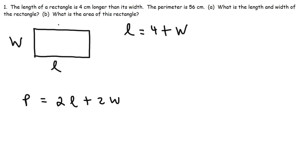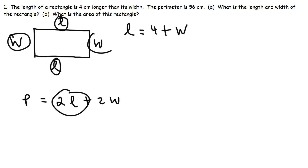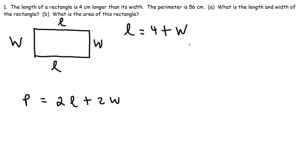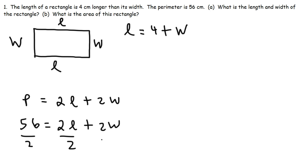Keep in mind we have L here and W here, so L plus L gives us 2L, and W plus W gives us 2W. We're going to replace P with 56, so we have 56 equals 2L plus 2W. All of the numbers in this equation are even, so we can divide everything by 2. 56 divided by 2 is 28, and the 2s cancel, giving us 28 equals L plus W.